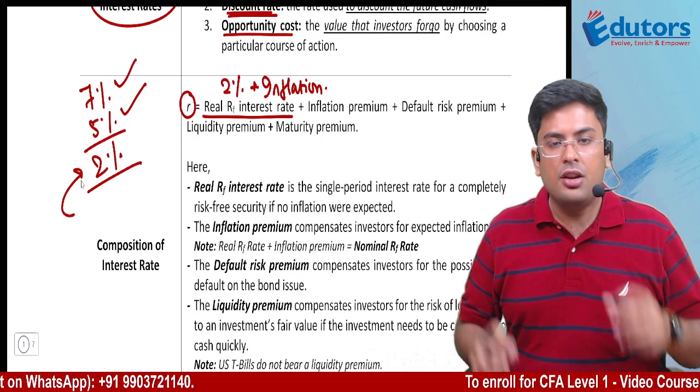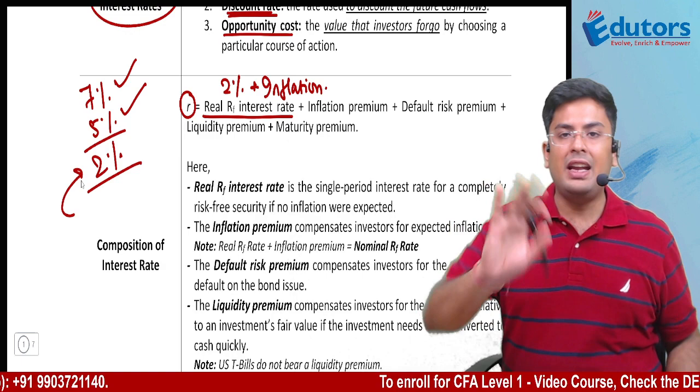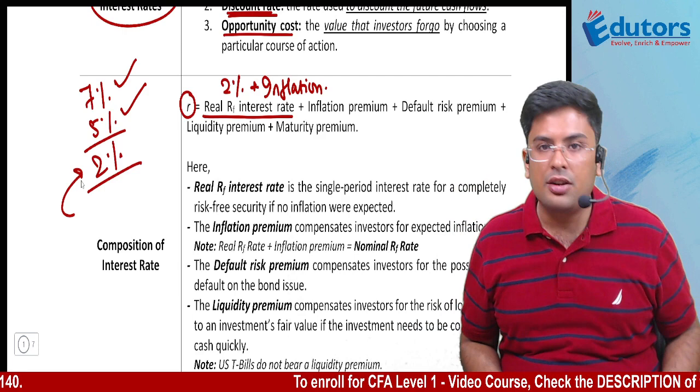Think of it this way: if FD gives you 7% and inflation in India is 5%, then out of 7%, 5% belongs to inflation. Net-net, you are only getting 2% real return. That 2% is the real risk-free return. Real return is that return where inflation has not been accounted for — we have essentially set inflation aside.